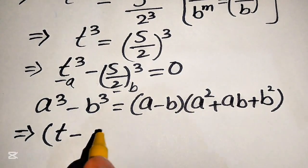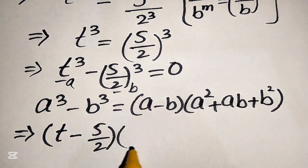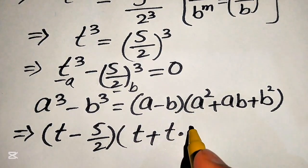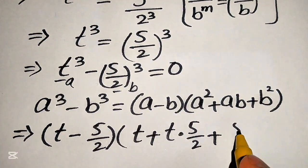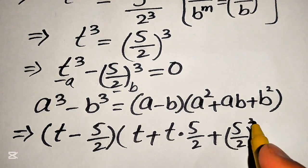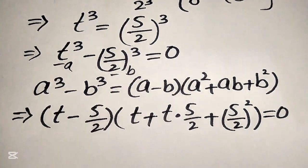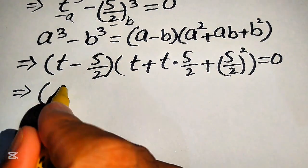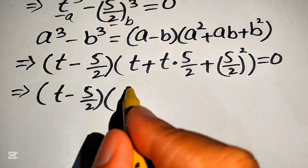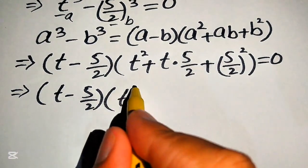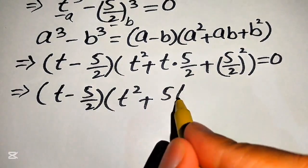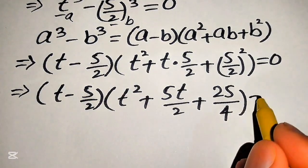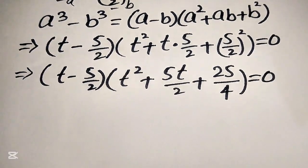Substituting a equals t and b equals 5 over 2 into the formula, we write: (t minus 5 over 2) times (t squared plus t times 5 over 2 plus (5 over 2) squared). Expanding, this becomes t squared plus 5t over 2 plus 25 over 4.